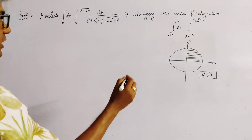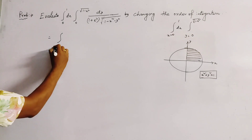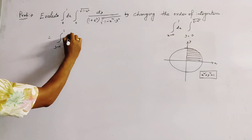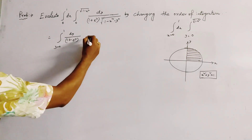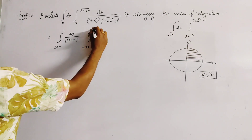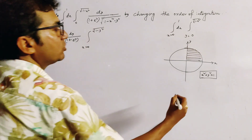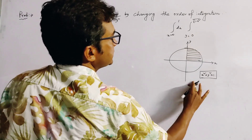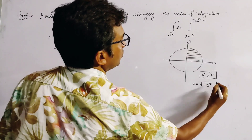Clearly, if we change the order of integration, we get the range of y equal to 0 to 1, with dy divided by (1 plus e to the power y), and the integration of x from 0 to root(1 minus y squared), because x squared equals 1 minus y squared.